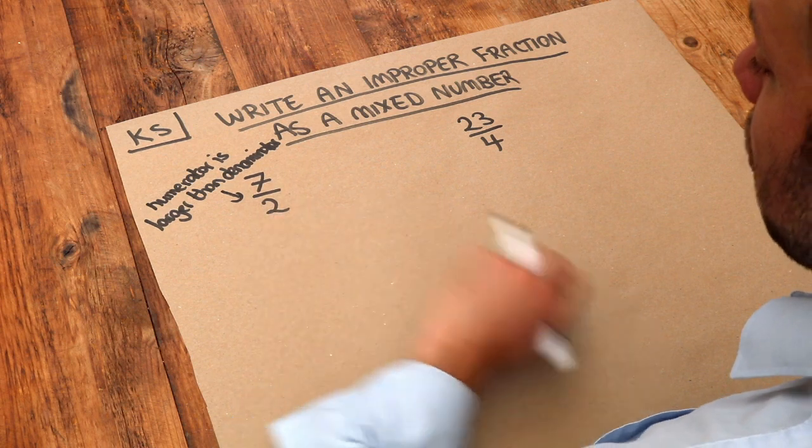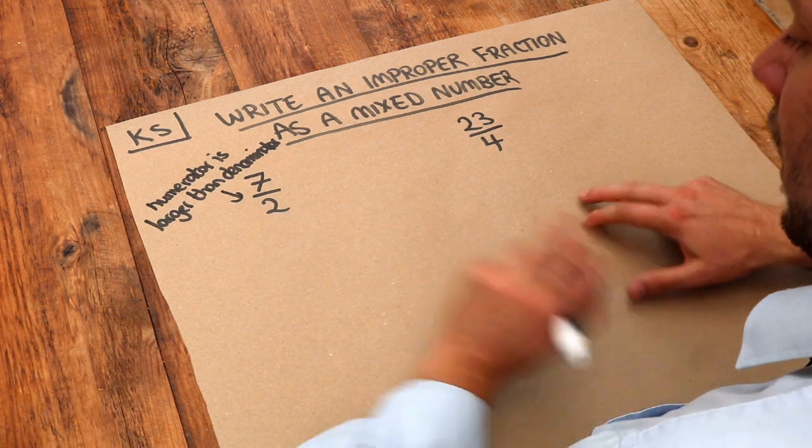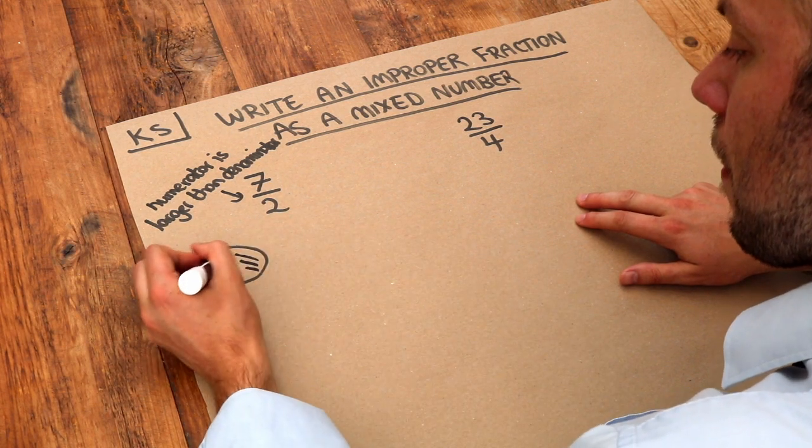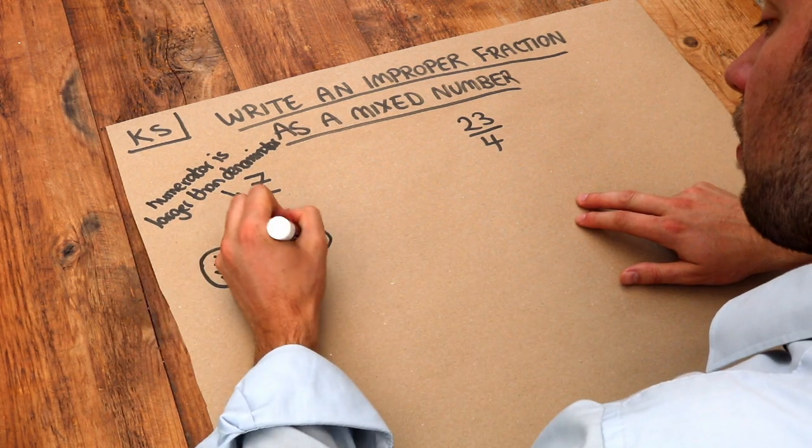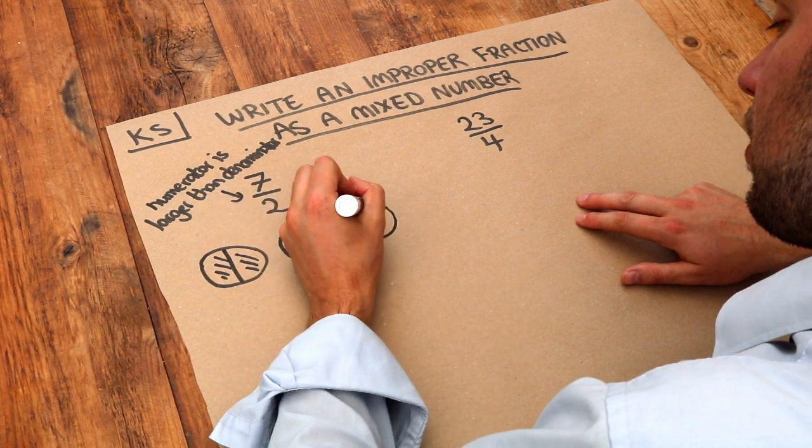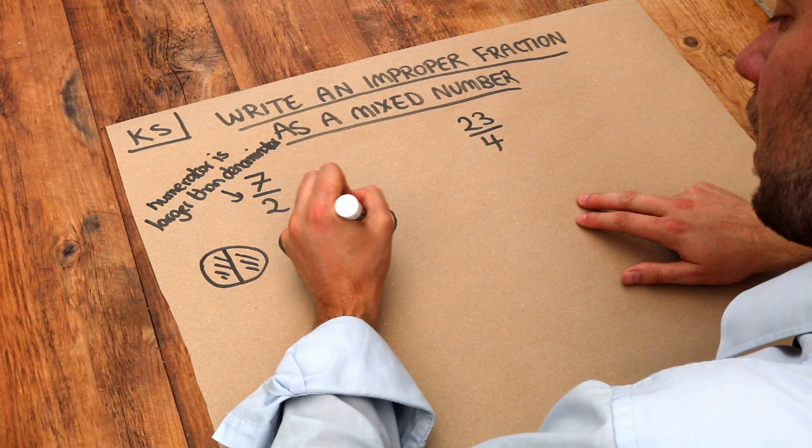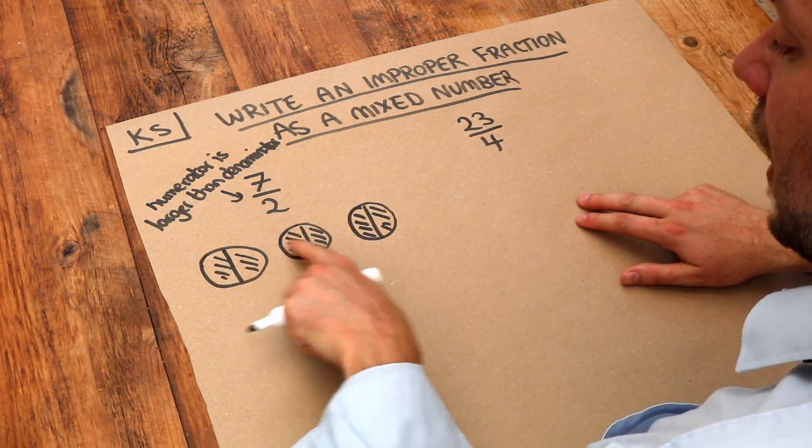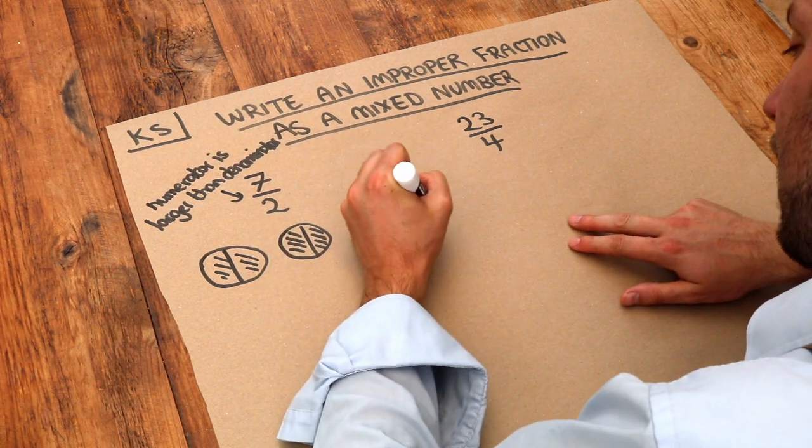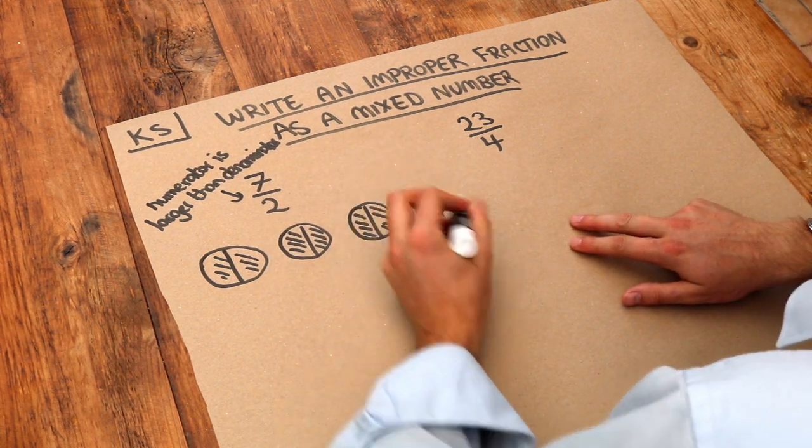Let's say we had seven halves of a pizza. What would that look like? If I had two halves, that would be a whole pizza. Another two halves would be another whole pizza. Another two halves would be another whole pizza. So I'm up to six halves at the moment, but we have seven halves, so you can see that we have an extra half a pizza.